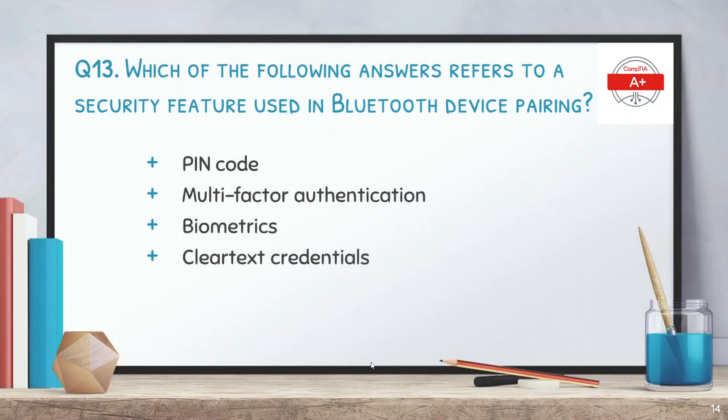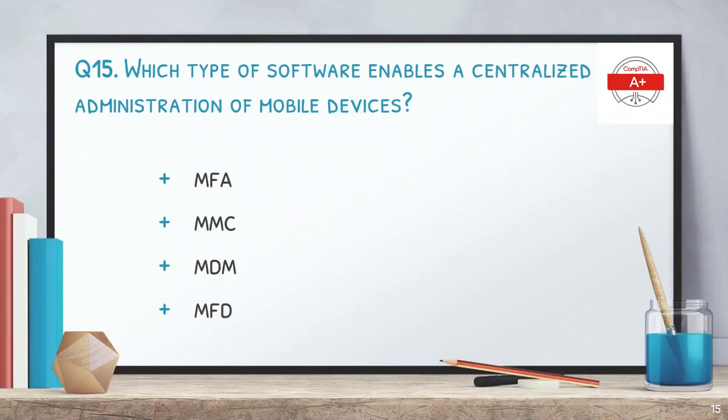The next question: which of the following answers refers to a security feature used in Bluetooth device pairing? The options are PIN code, multi-factor authentication, biometrics, and clear text credentials. The answer is PIN code. We usually use a four-digit PIN code for Bluetooth device pairing.